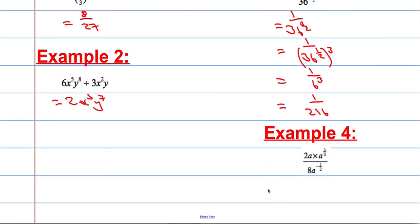Next one here. Again, just using a combination of all the rules here. Let's simplify the top first and foremost. That will give me 2a to the power of 1 and 3 quarters, or let's call it 7 over 4. Remember when you multiply powers with the same base or terms with the same base, you add the powers. So that's 2a to the power of 7 over 4 over 8a to the power of minus a half.